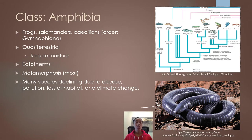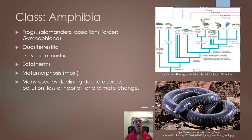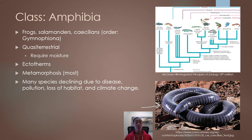Amphibians also require moisture for respiration. Frogs, salamanders, and toads use their skin as a secondary respiratory organ. In order for respiration to occur across the skin, the skin must be moist. If their skin dries out, they cannot undergo respiration using the skin and won't be able to get as much oxygen as they need. So they require moisture even though they live in terrestrial environments.